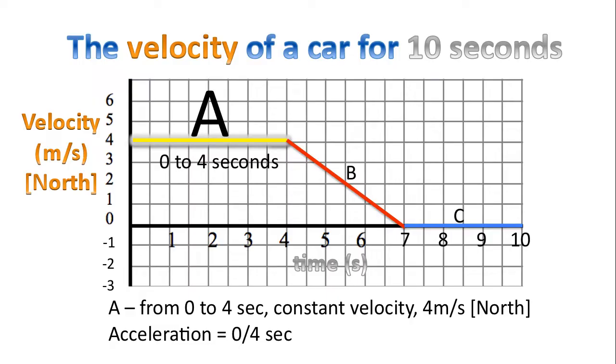Slope is rise over run. And looking at the first section there is no rise. The rise is zero. The run is four seconds. And so for section A from zero to four seconds the acceleration is exactly zero.